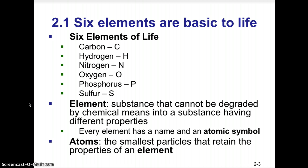These six elements are essential to all living things on planet Earth. An element is a substance that cannot be degraded by chemical means into a substance having different properties, so elements are considered pure substances. Each element has its own atomic symbol on the periodic table, and the smallest particles that retain the properties of an element are its atoms.